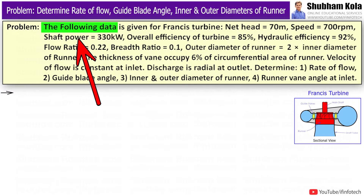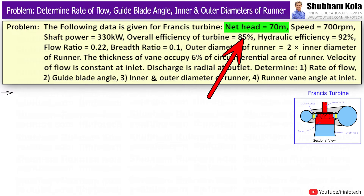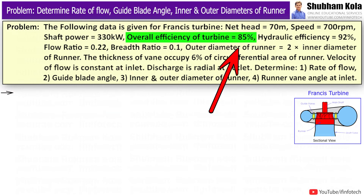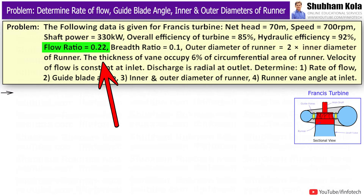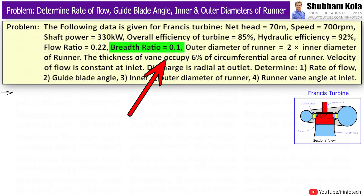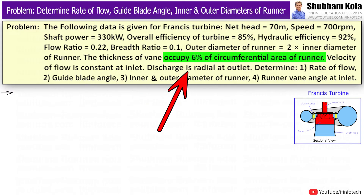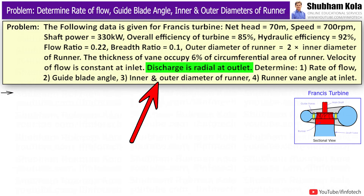Here is the statement. The following data is given for a Francis Turbine: net head is 70m, speed equal to 700rpm, shaft power is 330kW, overall efficiency of turbine is 85%, hydraulic efficiency is 92%, flow ratio equal to 0.22, breadth ratio equal to 0.1, the outer diameter of runner is twice the inner diameter, thickness of vane occupies 6% of circumferential area of runner, velocity of flow is constant at inlet, and discharge is radial at outlet.